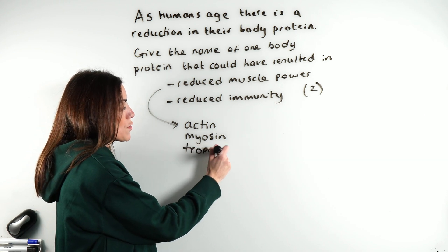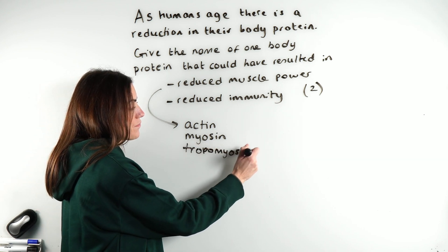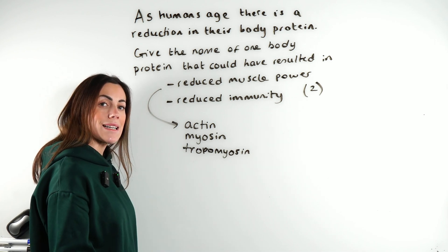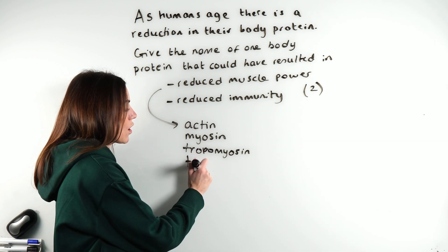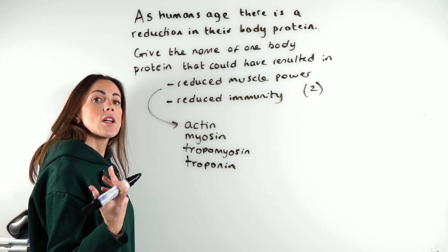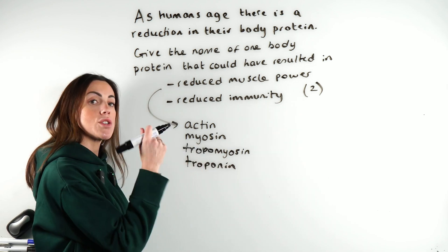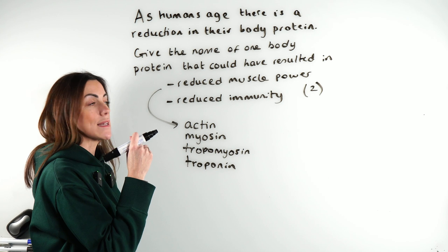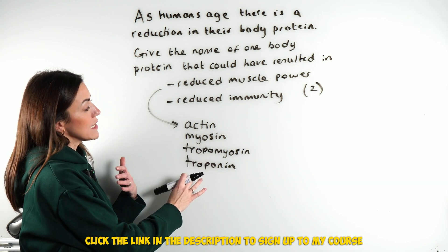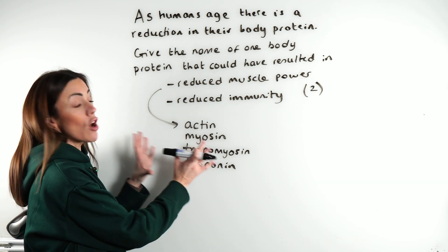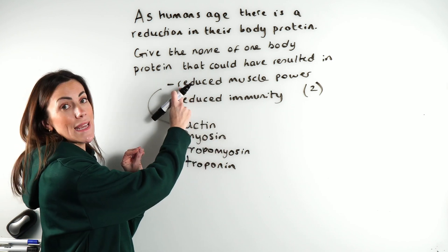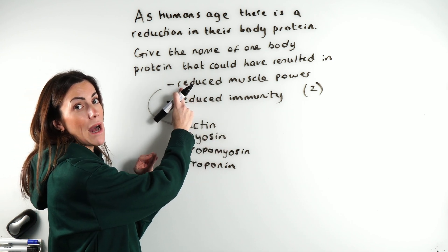We've got tropomyosin, which is the protein that is wrapped around the actin. And we've also got troponin, which is the globular protein attached to the tropomyosin. Any of those four proteins — if there is a reduction in them, that would explain a reduction in muscle power.